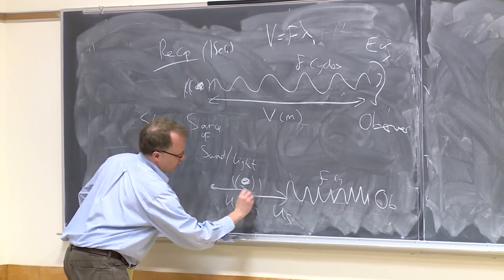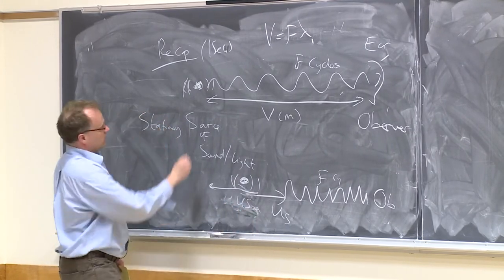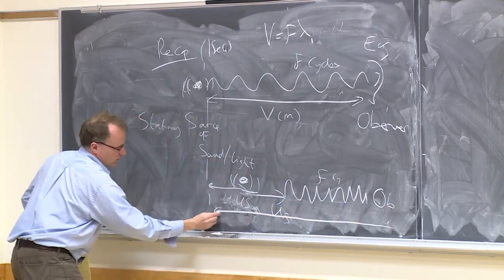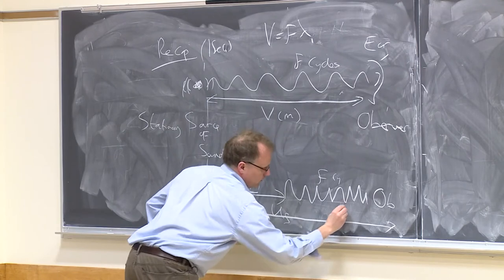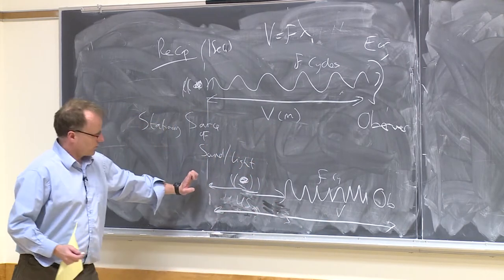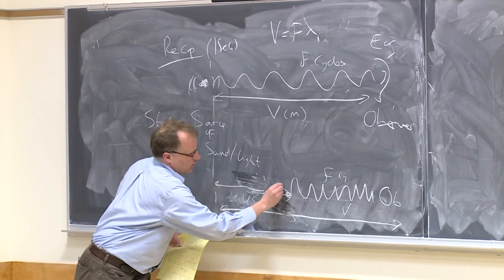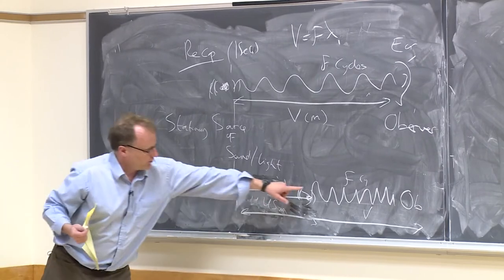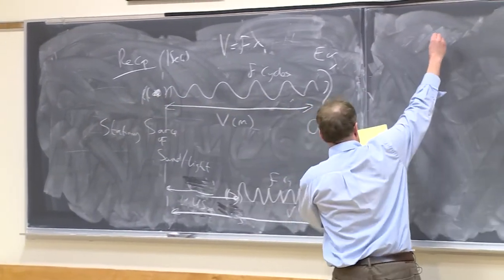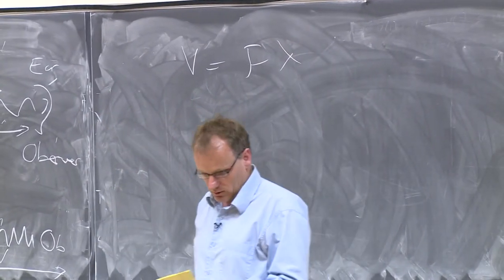This would be US meters. And the whole distance is v meters. So the source moves. I guess it's moved to here, let's say. Because it's moving, these f cycles are squashed into a shorter distance. So we have v equals f lambda. It's the equation for a wave.